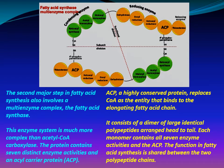The second major step in fatty acid synthesis involves a multi-enzyme complex — the fatty acid synthase. This enzyme system is much more complex than acetyl-CoA carboxylase. The protein contains seven distinct enzyme activities and an acyl carrier protein (ACP), a highly conserved protein that replaces coenzyme A as the entity binding the elongating fatty acid chain. It consists of a dimer of large identical polypeptides arranged head to tail, with each monomer containing all seven enzyme activities and the ACP.